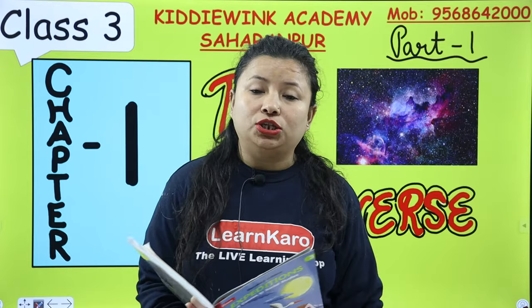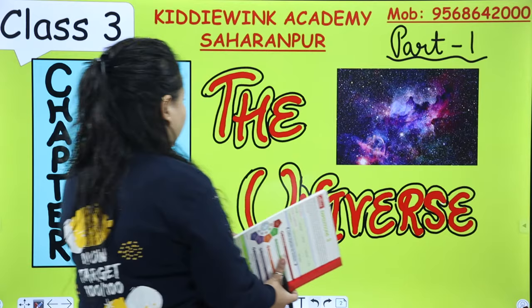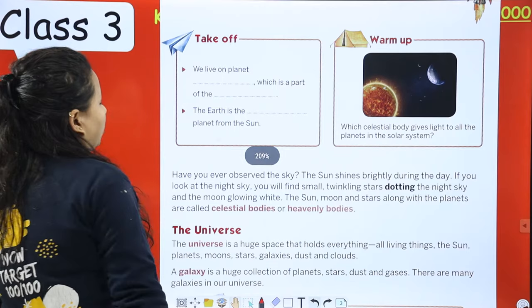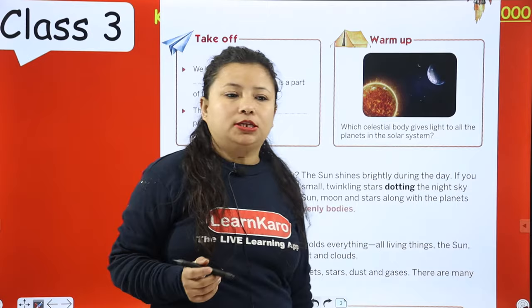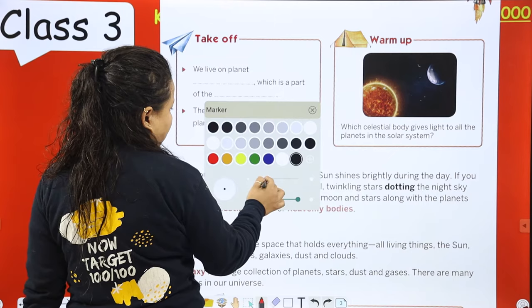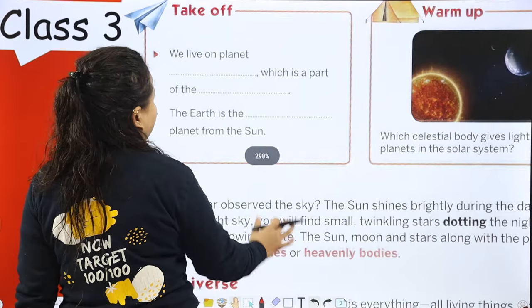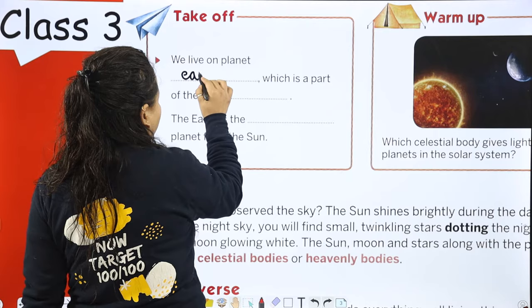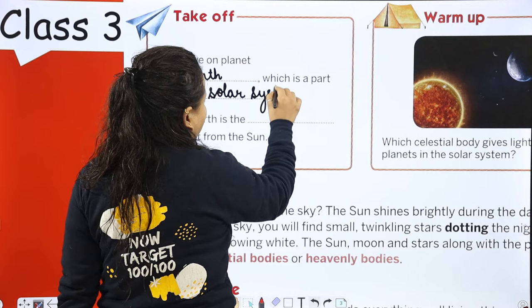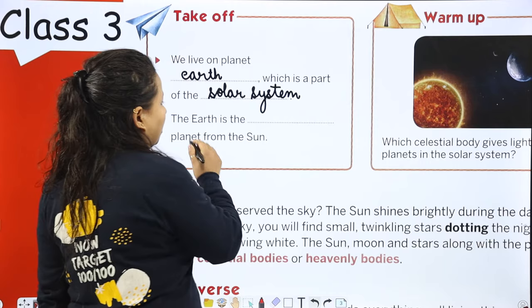So what is the universe? First of all, I will explain you. Open your book, chapter number one, The Universe. We live on a planet whose name is Earth, which is part of the solar system. The Earth is the third planet from the sun.